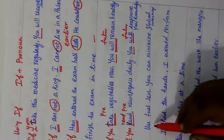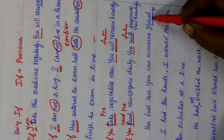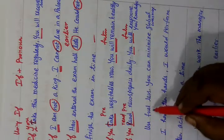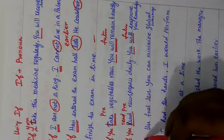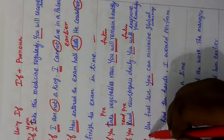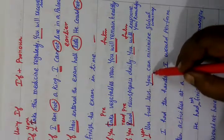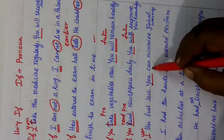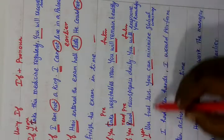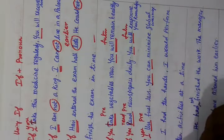Exercise 6: 'Use fuel less. You can minimize global warming.' Using present tense, we write: 'If you use fuel less, you can minimize global warming.' 'Use' is present tense.